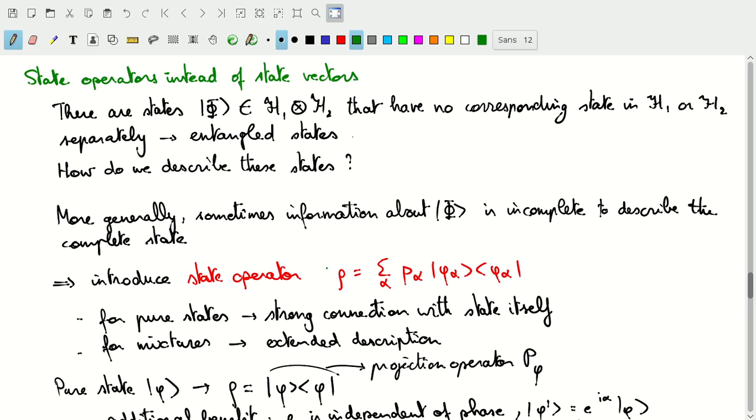And so, we introduce the state operator rho as the sum over projection operators multiplied with probabilities of finding this particular state phi, or of having that particular state phi.